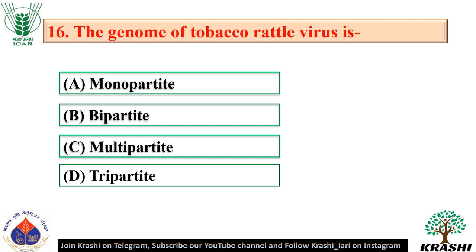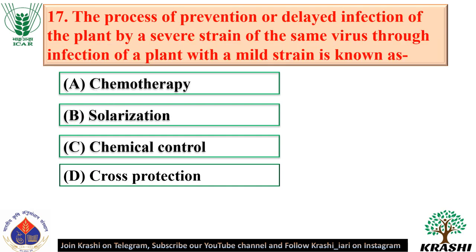Question number 16: The genome of tobacco rattle virus is bipartite — option B. Question number 17: The process of prevention or delayed infection of the plant by a severe strain of the same virus through infection with a mild strain is known as cross protection.